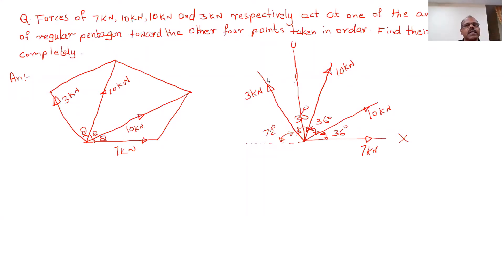Welcome to today's classes. Today we are going to solve one question on composition of forces. The question is: forces of 7 kN, 10 kN, 10 kN and 3 kN respectively act at one of the angular points of a regular pentagon towards the other four points taken in order. Find the resultant completely.